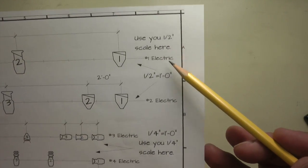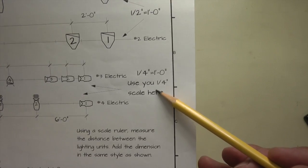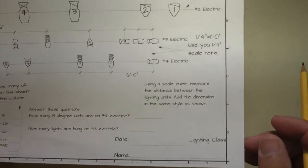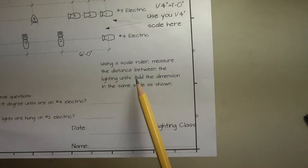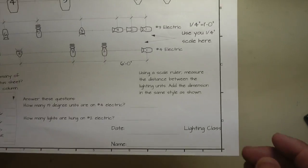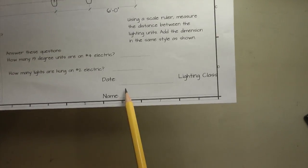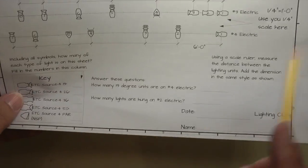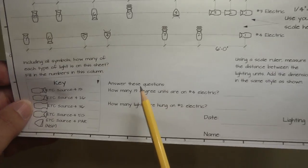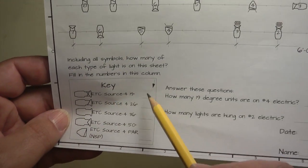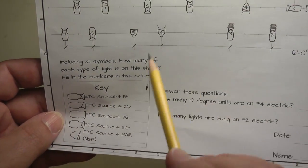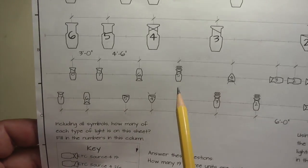Here you're going to use your half-inch scale. Here you're going to use your quarter-inch scale. We're going to measure the distance between the lighting units. Put the date and your name. A couple of questions to answer right there. And then a column to fill in the quantities of the lighting units on this little sample light plot.